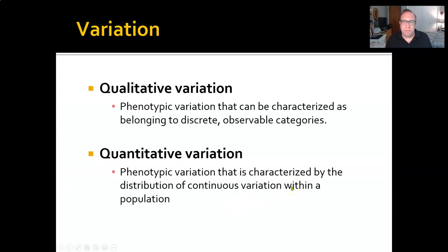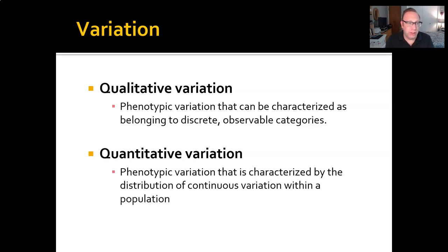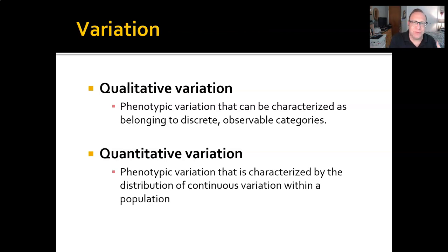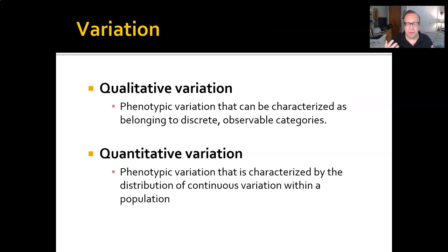The first thing we need to understand is that this is all about variation. Genes are a source of variation for natural selection to work on. But things can vary in a couple of different ways. We can talk about qualitative variation, which is phenotypic variation that can be characterized as belonging to discrete observable categories — when you have things that don't have a lot of in-between states. Wine varieties, for example — if you go by color, you have reds, whites, and rosés.